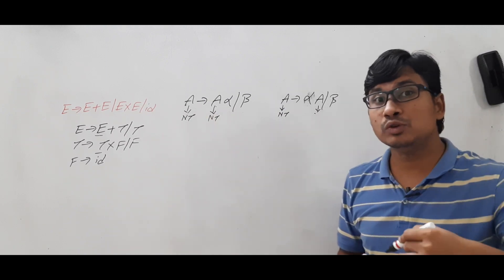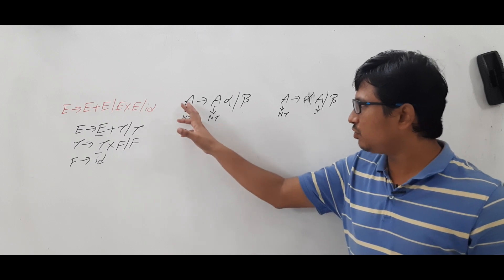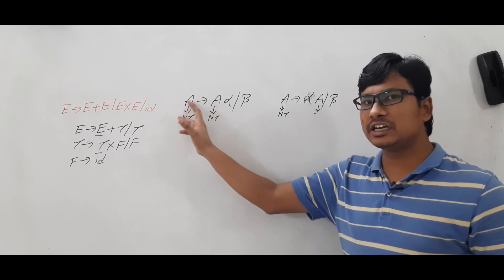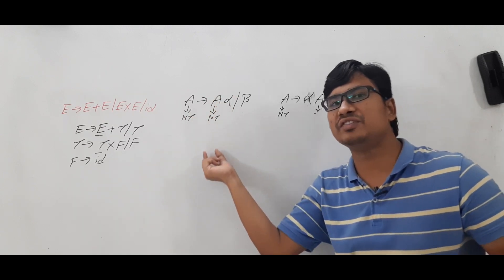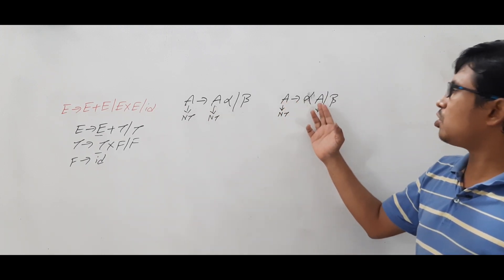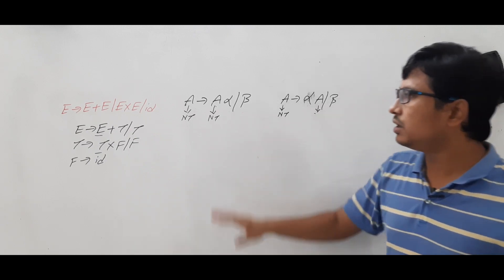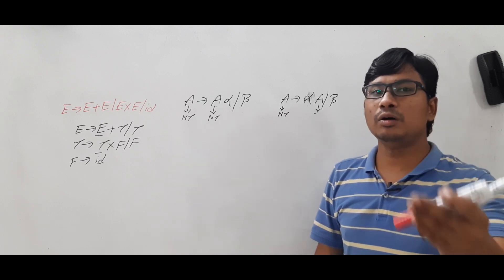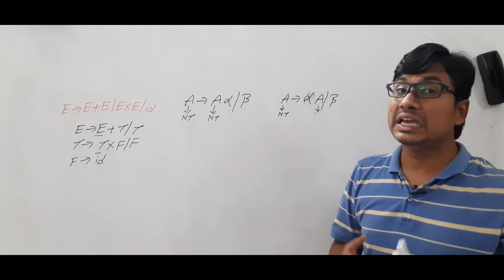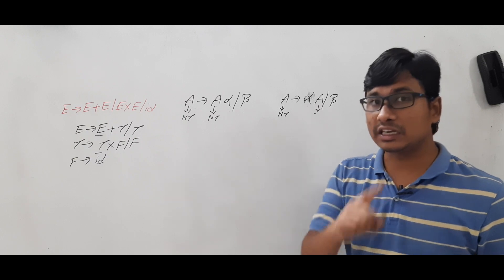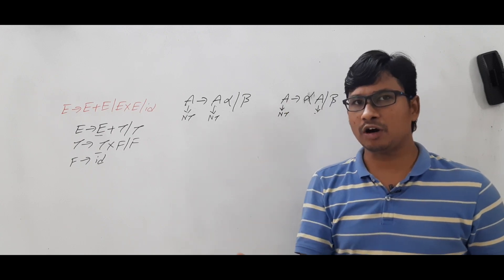The reason we use the term 'recursion' is that a recursive function is one that calls itself. Here, A is calling itself: A → Aα means A is generating A. In left recursion, A appears on the left of the right-hand side; in right recursion, A appears on the right. The problem with left recursive grammar is that top-down parsers do not allow it, so we must convert it to an equivalent right recursive grammar.